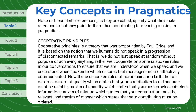Cooperative Principles. Cooperative Principles is a theory propounded by Paul Grice, and it is based on the notion that we humans do not speak in a progression of disconnected remarks — that is, we do not just speak at random without purpose. Rather, we cooperate on some unspoken rules in our conversations to ensure that we are understood when we speak and understand when spoken to. These unspoken rules give rise to four maxims: the maxim of quality, which states that your contribution must be reliable; maxim of quantity, which states that you must provide sufficient information; maxim of relation, which states that your contribution must be relevant; and maxim of manner, which states that your contribution must be ordered.